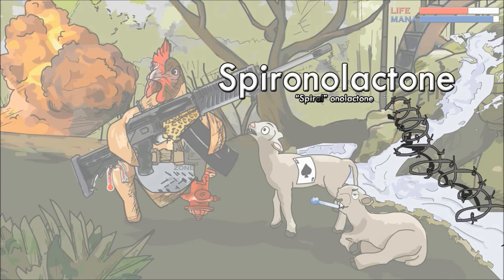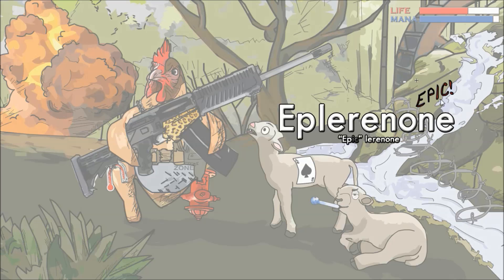Spironolactone is represented by the spiral barbed wire running across the river — spironolactone, spiral wire. Eplerenone is represented by the word 'epic' written into the rock behind the river. Not only does this remind you of how epic this picture is, but more importantly, it reminds you of eplerenone.